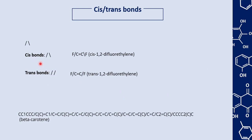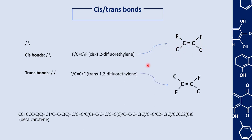We can also represent cis and trans bonds. To represent cis bonds, we use two bars in a caret-like orientation. For example, here we have cis-1,2-difluoroethylene — you can see that both fluorines are on the same side, and both carbon atoms are also on the same side. To represent trans bonds, we use two bars in parallel orientations. Here we have trans-1,2-difluoroethylene, where the carbon atoms and the fluorine atoms are on opposite sides of the molecule.